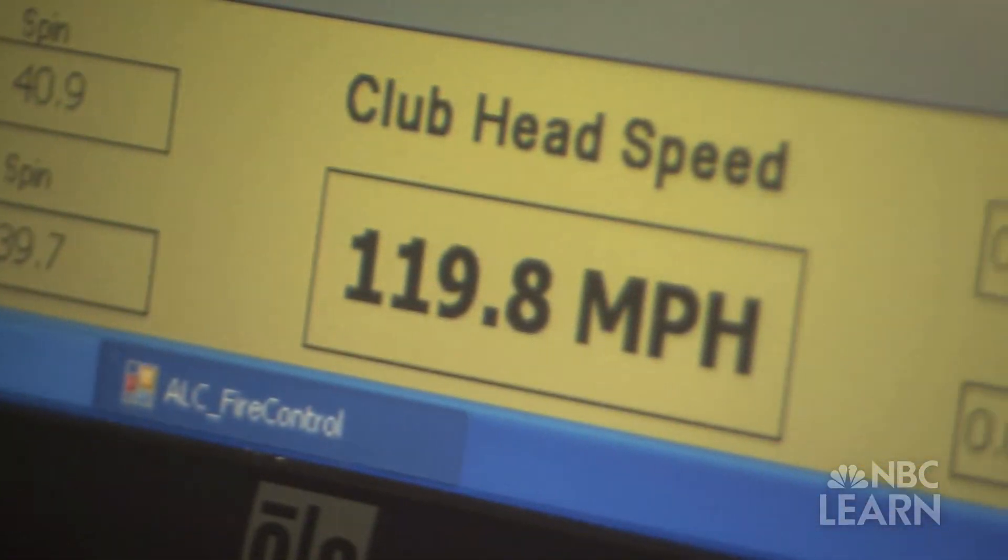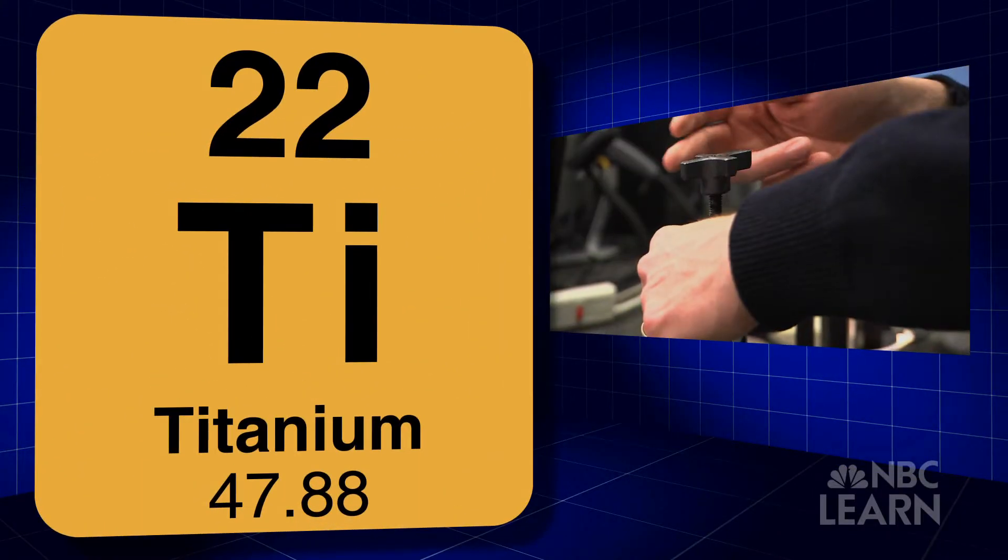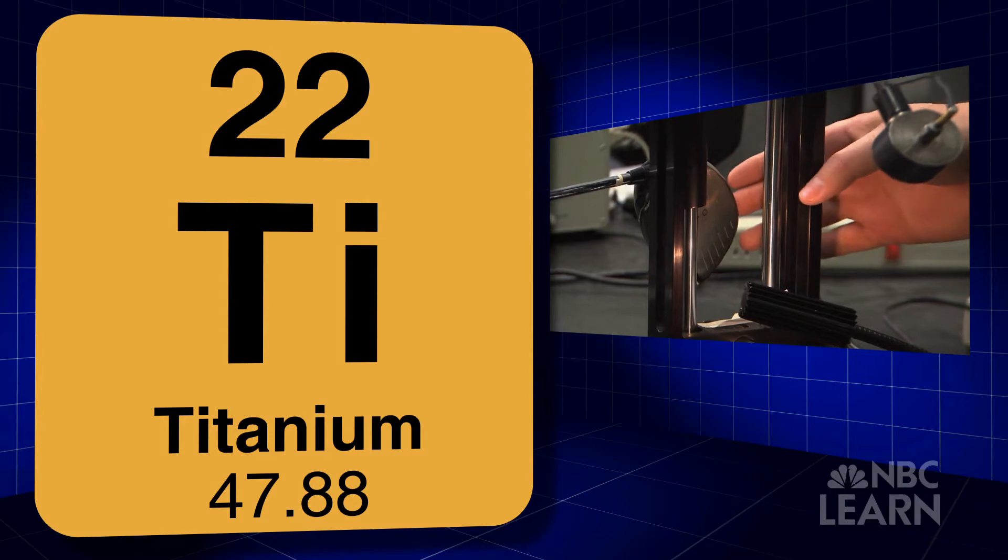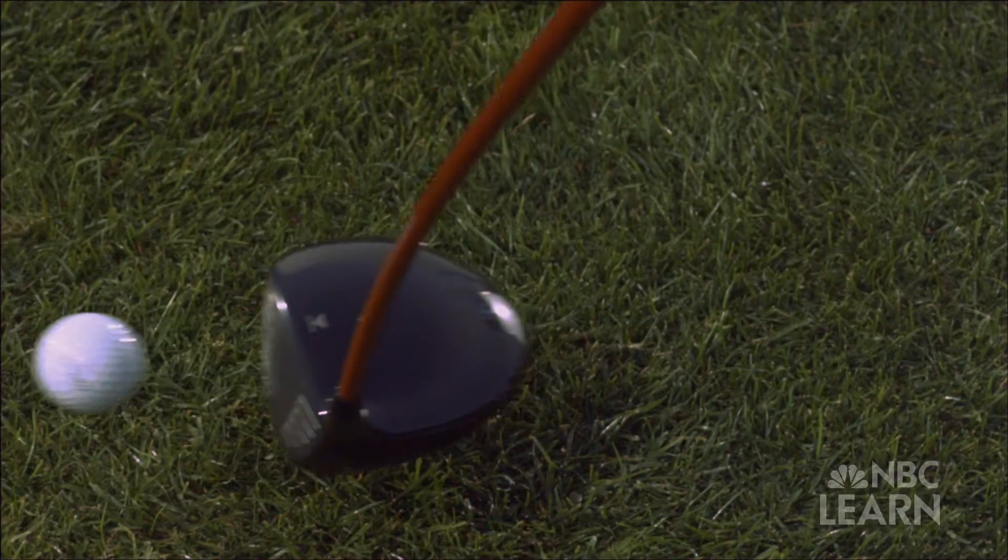Take a look at this golf club. It's composed of an element called titanium, a transition metal that is lightweight, flexible, and shiny. Ideal properties to make top-of-the-line golf clubs that golfers want to swing.